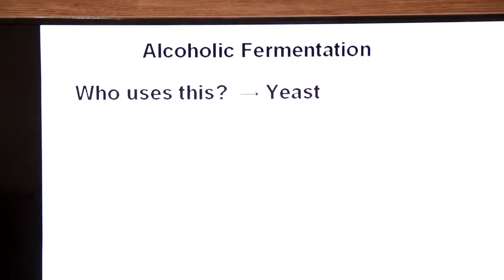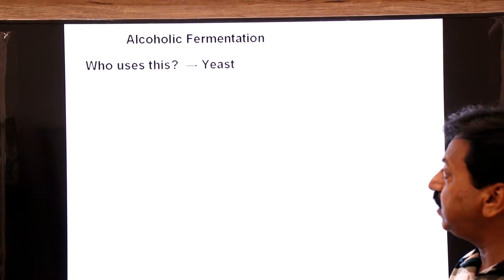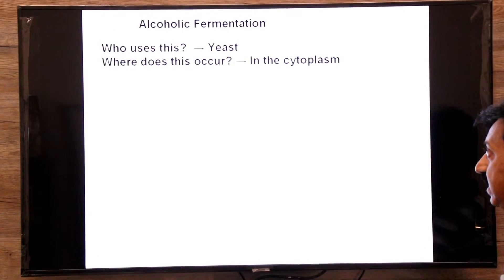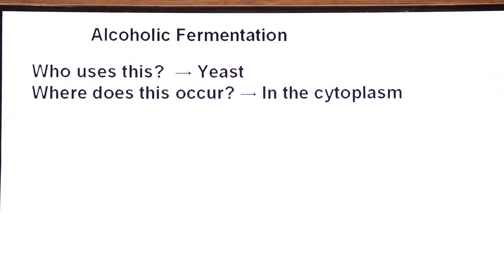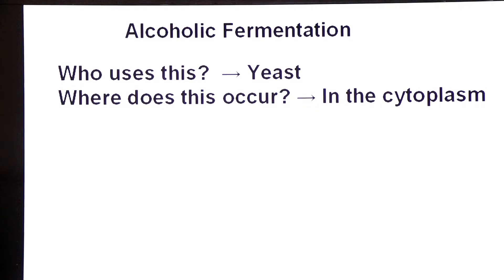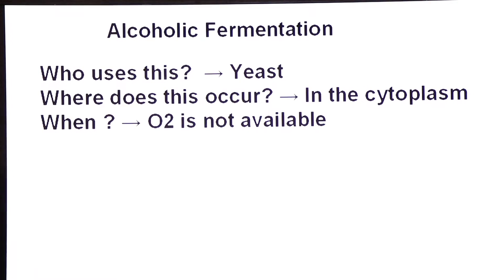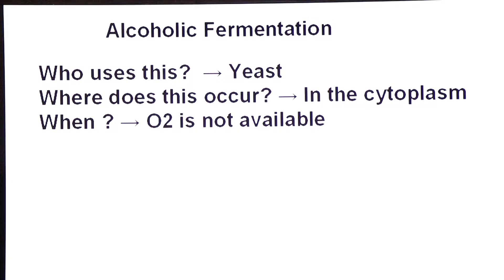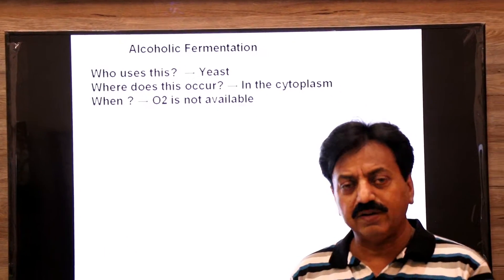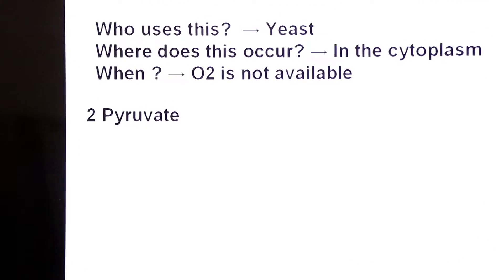Who uses alcoholic fermentation? The answer is yeast. Where does it occur? In the cytoplasm, and when? When oxygen is not available — the organism undergoes fermentation process.